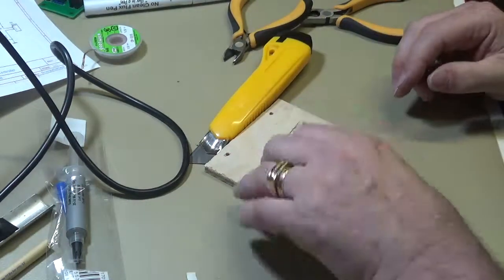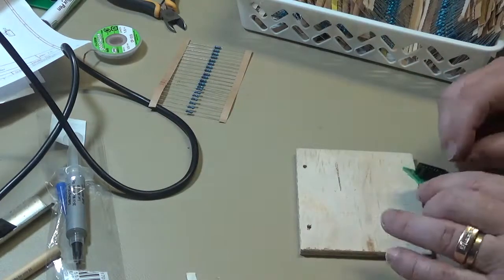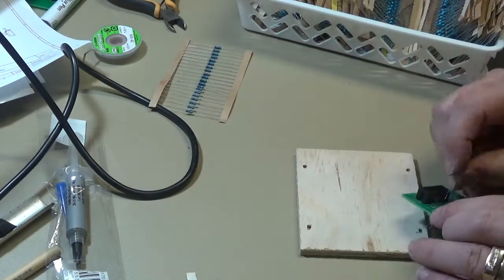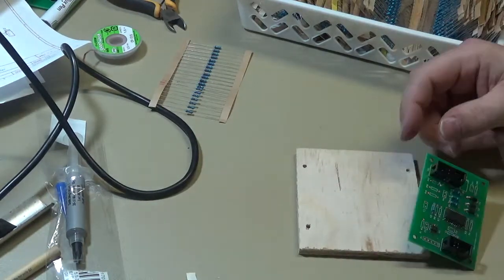Everything looked okay though, so I just moved on to the through-hole components, the rest of the resistors, capacitors and bits and pieces on the board and they all went together quite nicely.